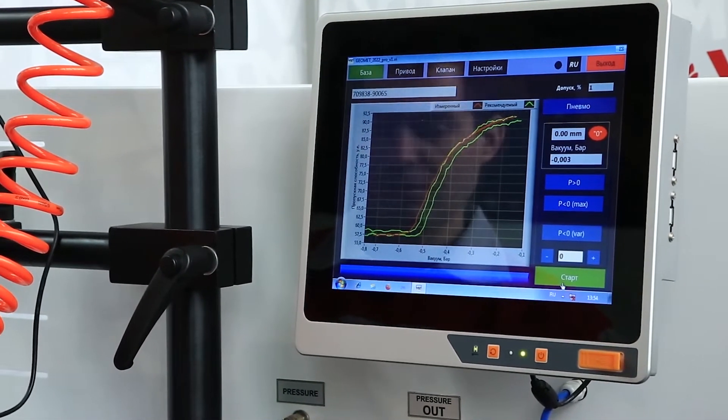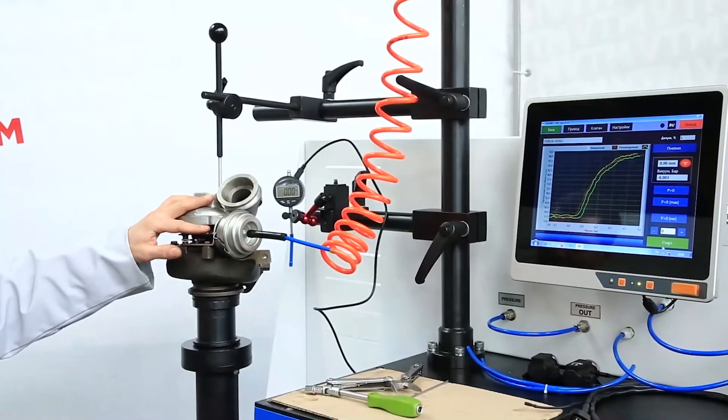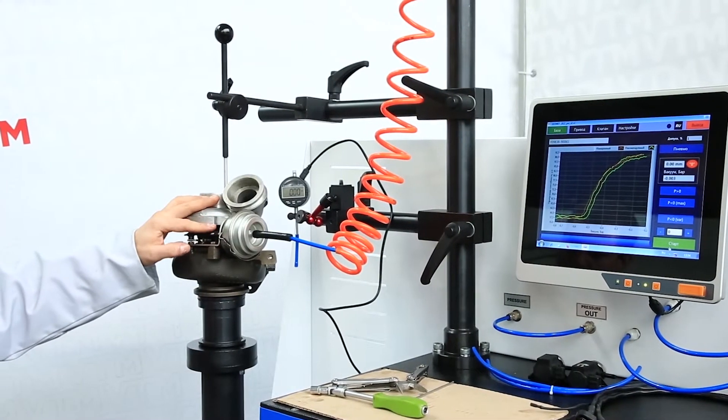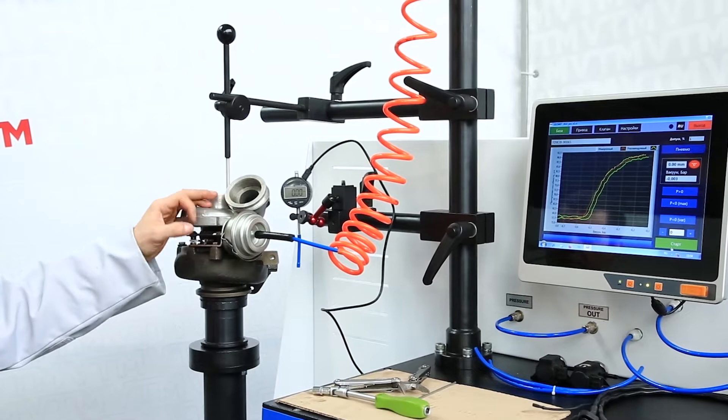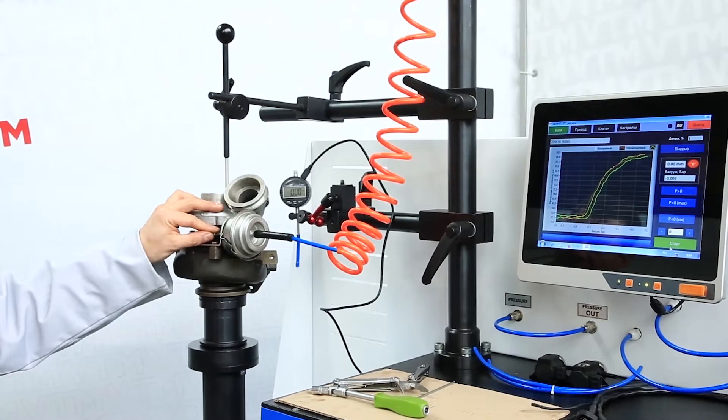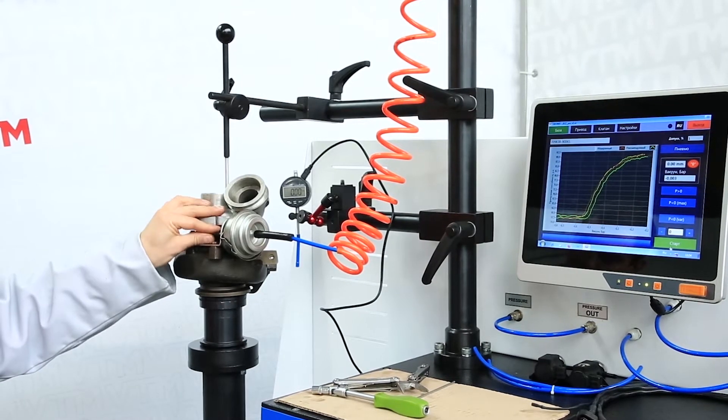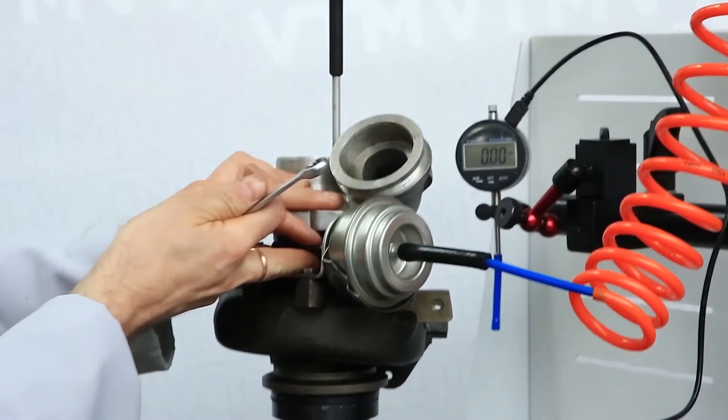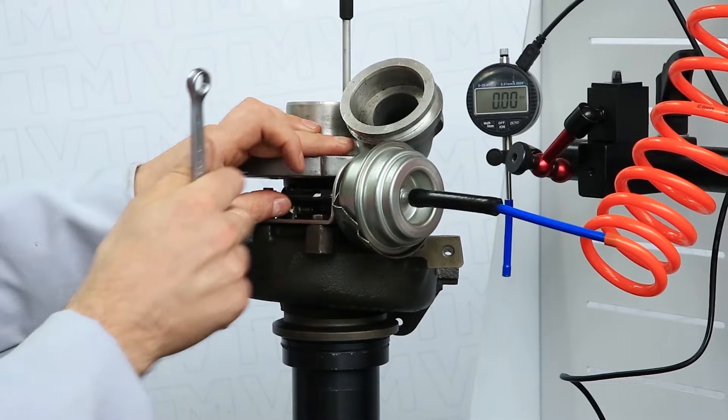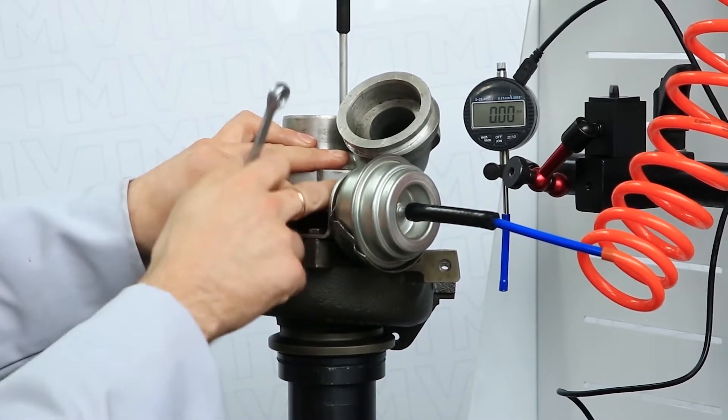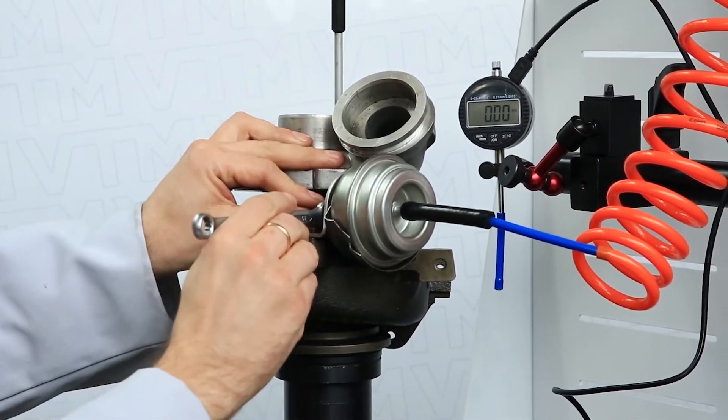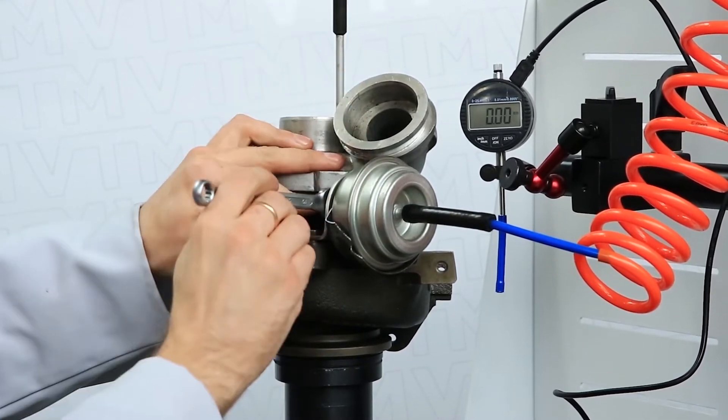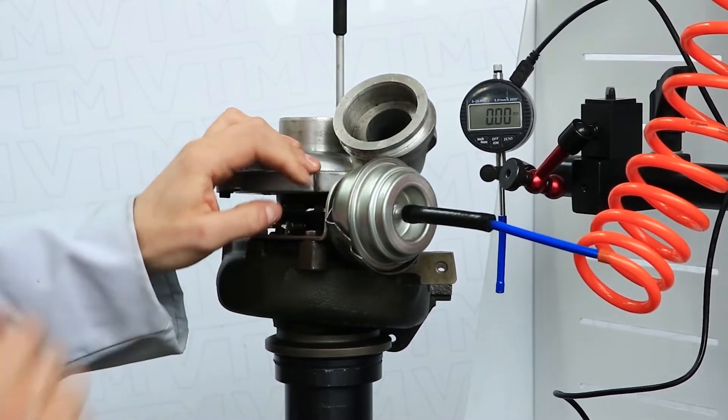In order to adjust, you need to twist the nut on the rod of the pneumatic actuator in the direction in which we need to shift. We take it and tighten it. It is preferably not too tight at first, then tighten, because the setting can go away when you tighten.